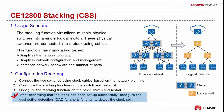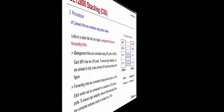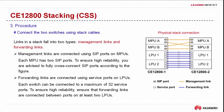Next, we will focus on the process of setting up a stack of two Cloud Engine 12800 switches. The first step is to connect stack cables. Links in a stack fall into two types: management links and forwarding links.